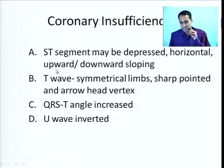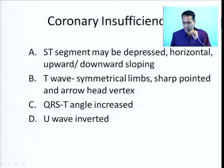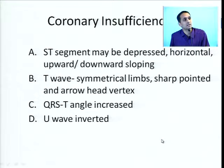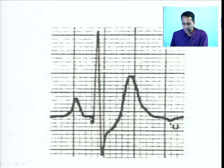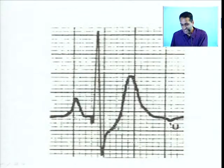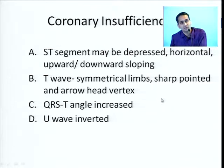Coronary insufficiency is probably the earliest stage — where you have not even had an NSTMI — where the ST segment may be depressed, horizontally or downsloping, the T wave becomes symmetrically inverted and sharply pointed, the QRST angle becomes widened, and sometimes all you can get is an inverted U wave. Signs of coronary ischemia on ECG: ST segment depression, symmetrically inverted T wave, widened QRST angle, and an inverted U wave.